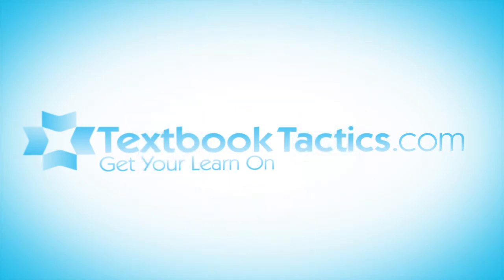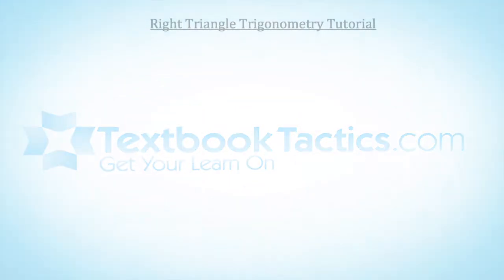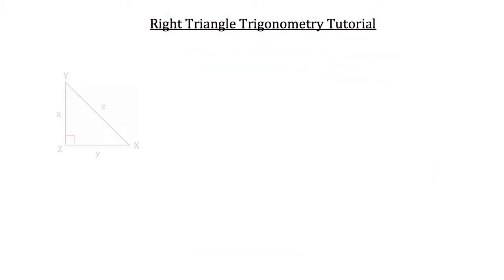This is the right triangle trigonometry tutorial. In right triangle trigonometry we deal with right triangles. The trigonometry aspect is that we're using angles and side lengths to solve for missing pieces of information of this triangle. In right triangle trigonometry we use three different formulas: the sine formula, cosine formula, and tangent formula.